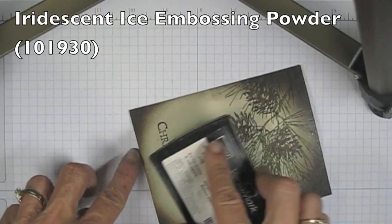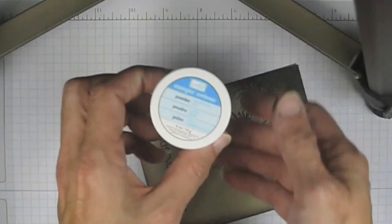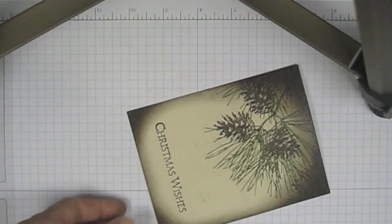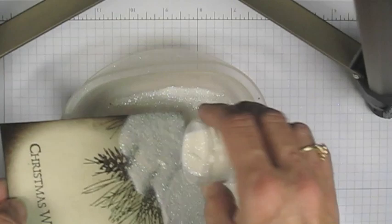I'm using iridescent ice. Iridescent ice is one of the embossing powders we sell. It's a clear embossing powder that has glitter in it, and I suppose that's how you could talk about it. So I'm just going to use it.